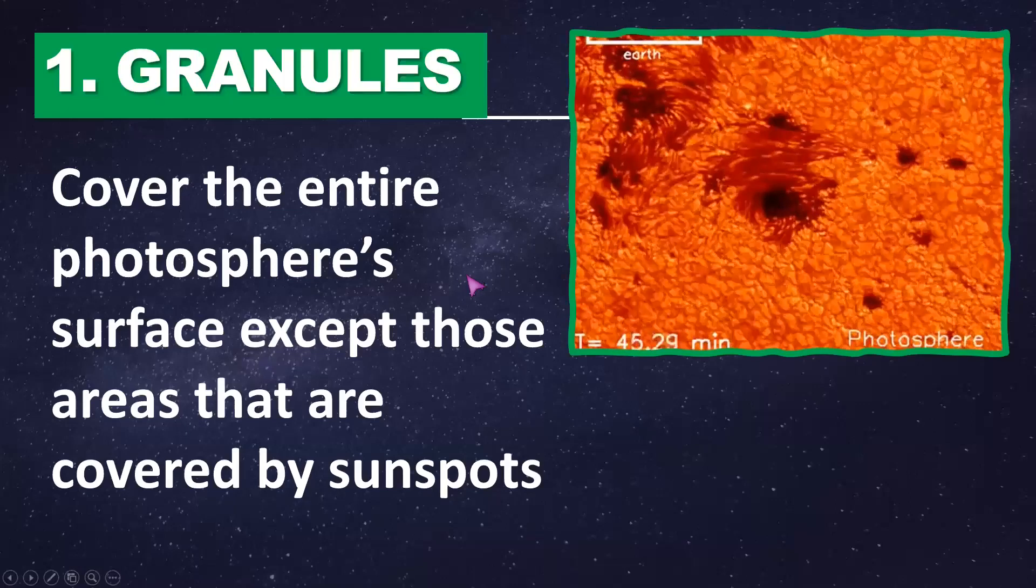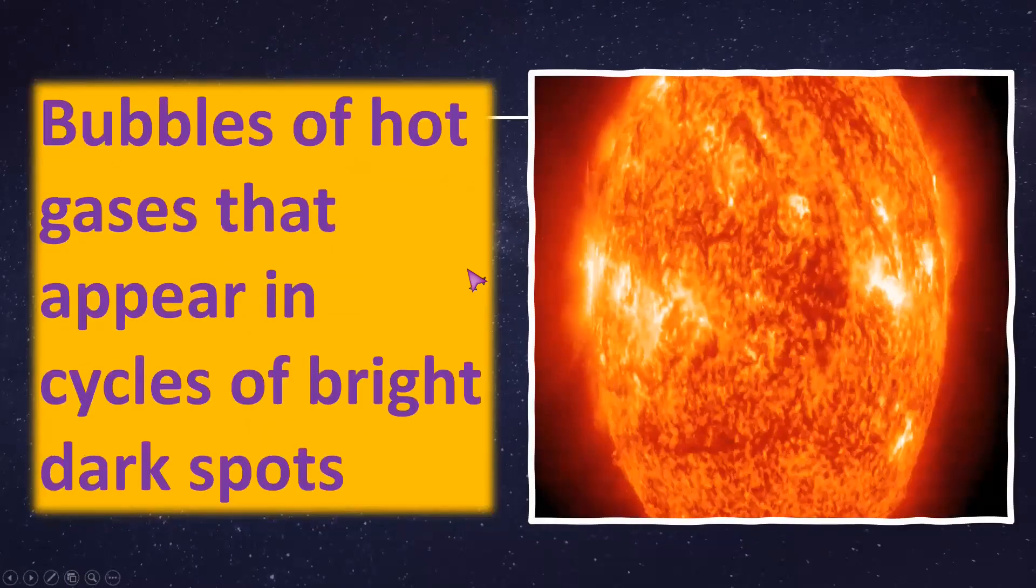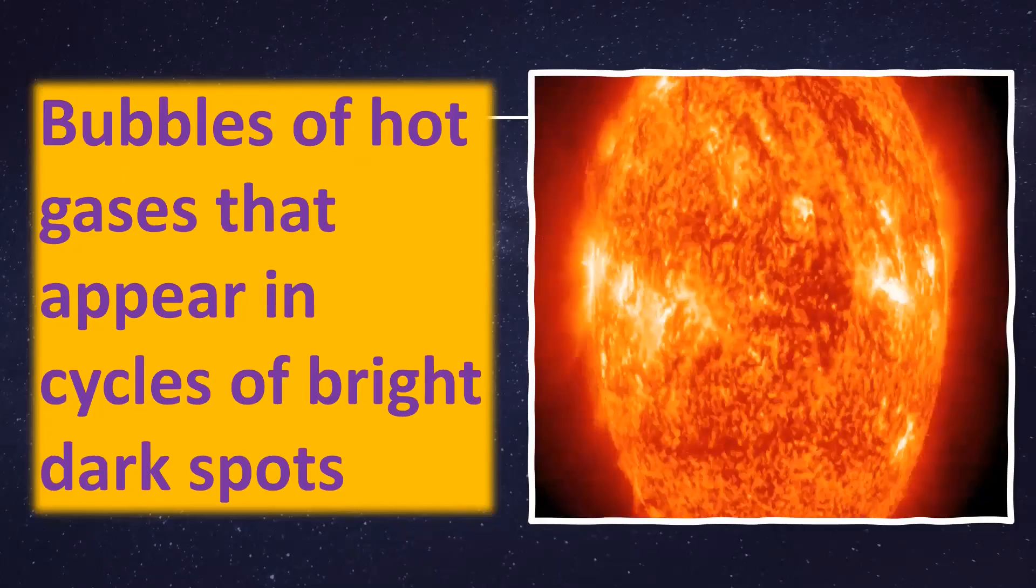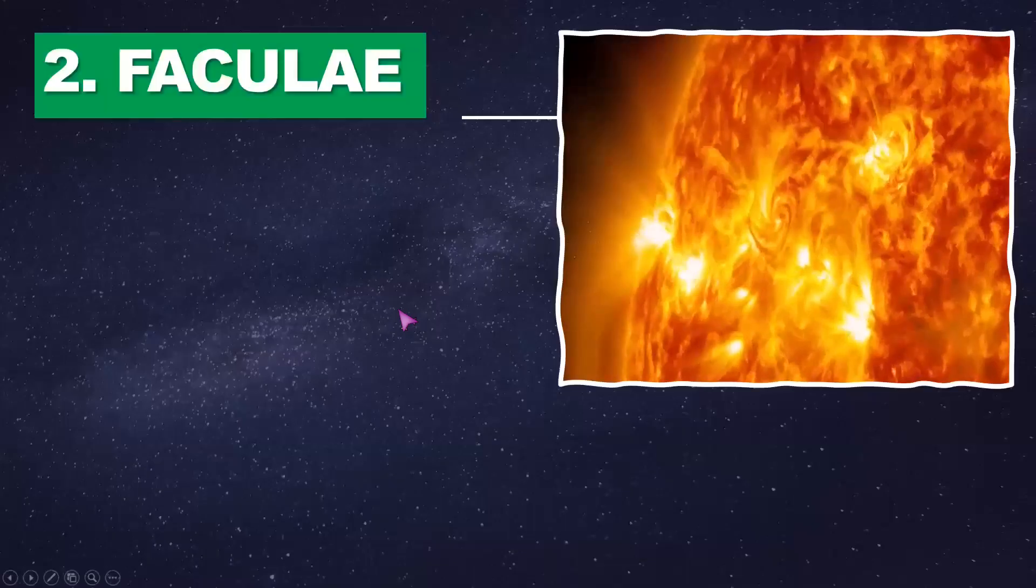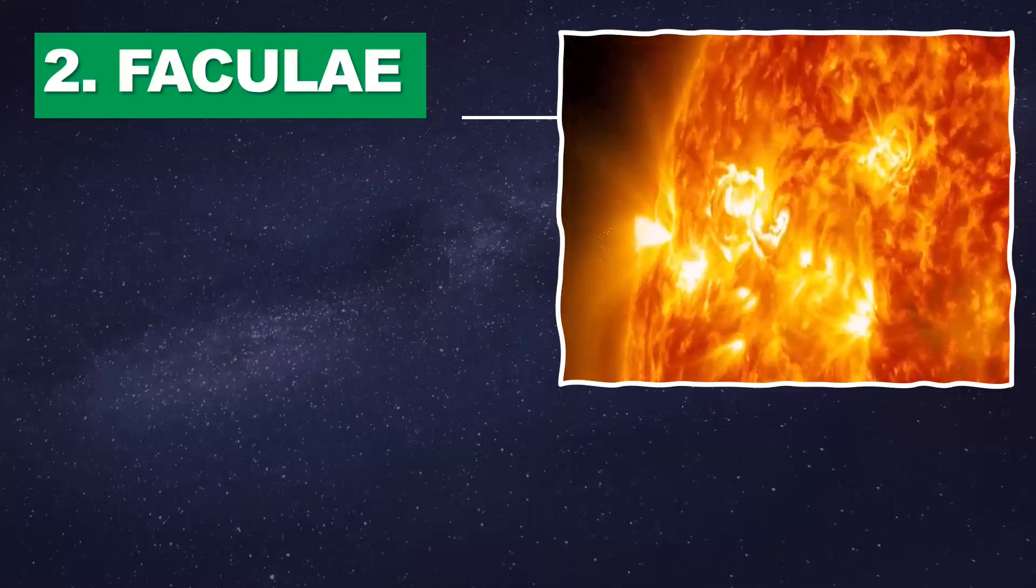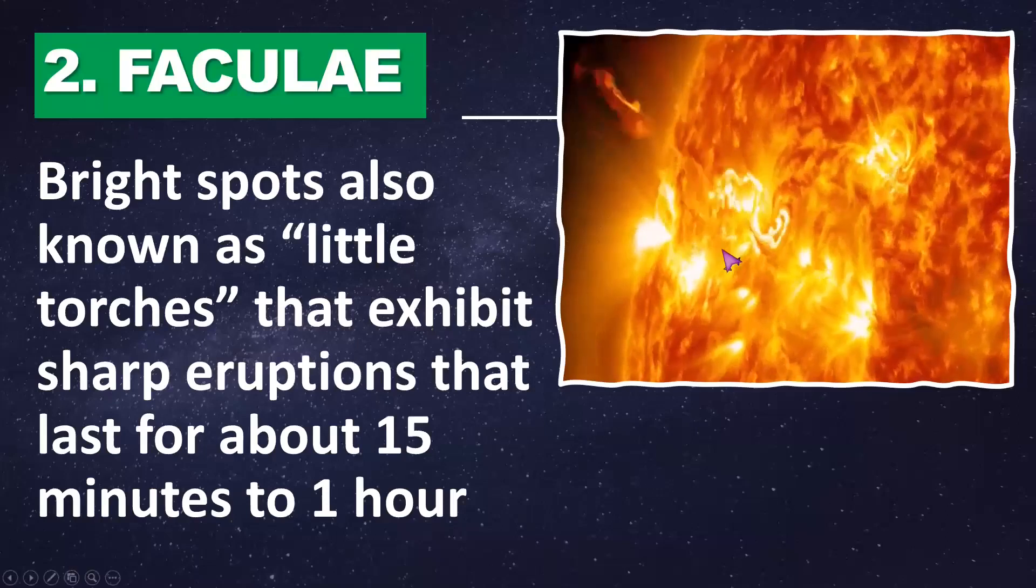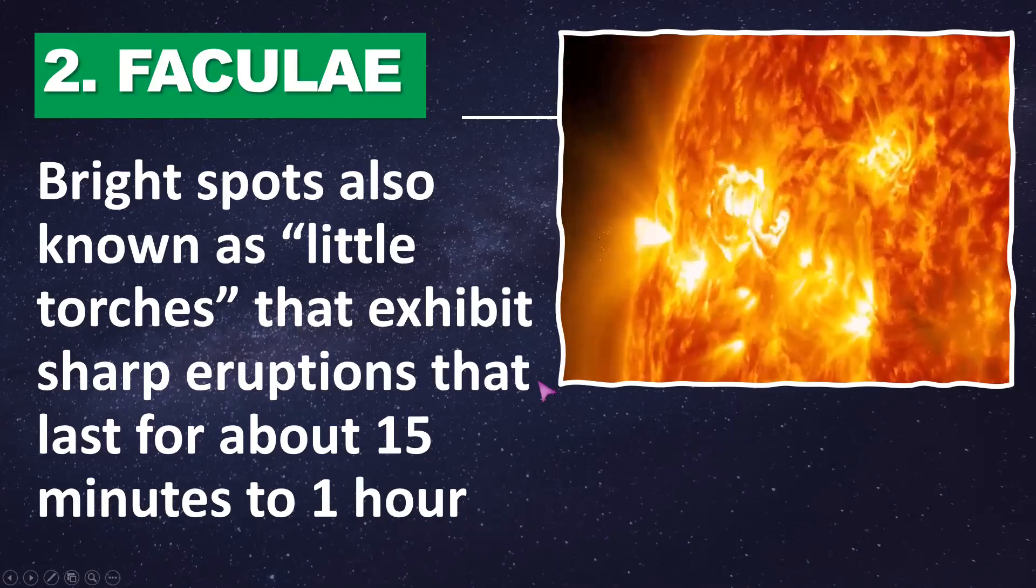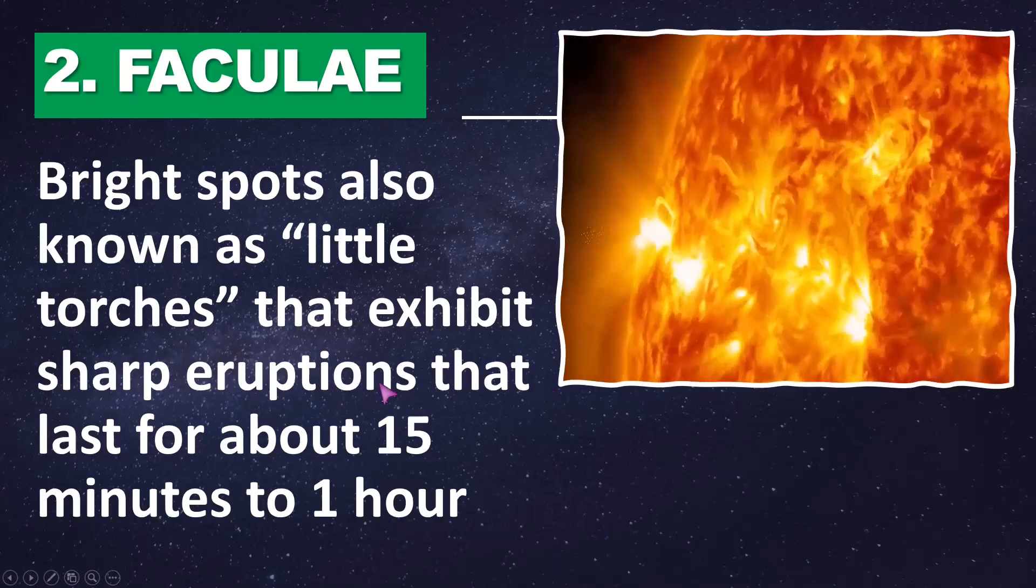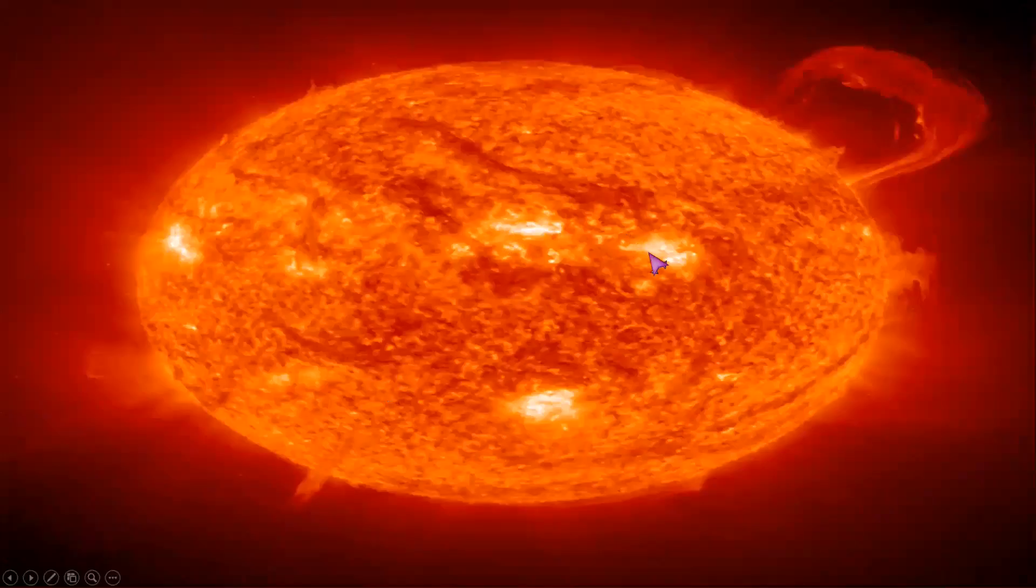Next, there are bubbles of hot gases that appear in cycles of bright and dark spots. The second feature of the photosphere is the faculae, bright spots also known as little torches that exhibit sharp eruptions lasting about 15 minutes to one hour.